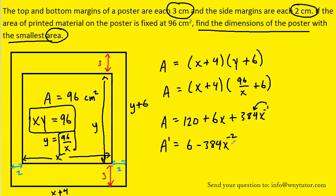The next step is to set this derivative equal to 0 and to solve for x. We can add this negative 384x to the negative 2 term over to the other side. That way these will cancel. We can multiply both sides of this equation by x to the positive 2. And what that does is it's going to cancel out these terms.